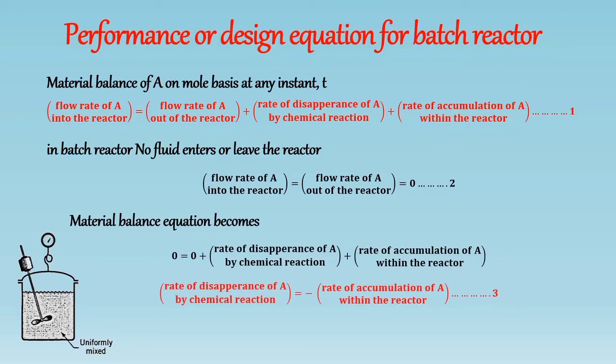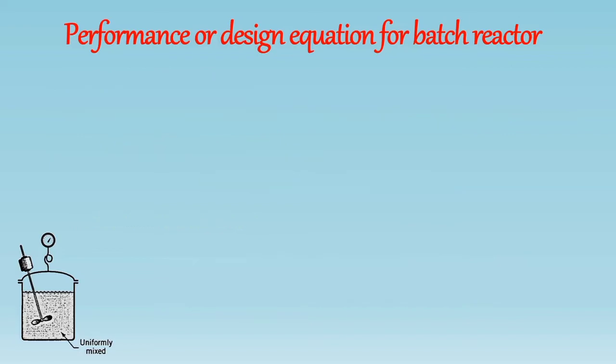Now let's calculate the rate of disappearance of A by chemical reaction. Rate of disappearance of A by chemical reaction in moles per unit time in reaction volume V is equal to minus RA into V.